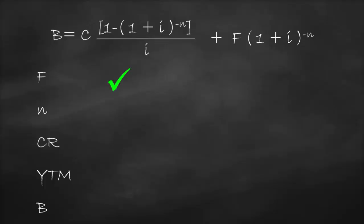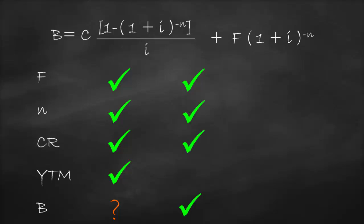We could give you face value, maturity, coupon rate, and yield to maturity and ask you to calculate the bond price. Or we could give you face value, number of payments (maturity), coupon rate, and bond price, and then ask you to calculate yield to maturity, which is our 'i' in this formula.